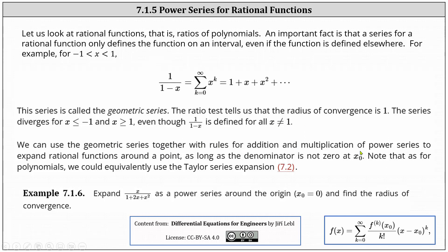We use rules for addition and multiplication of power series to expand rational functions around a point, as long as the denominator is not 0 at x sub 0. Note that as for polynomials, we can equivalently use the Taylor series expansion, which again is the formula shown below. As an example, we will expand x divided by the quantity 1 plus 2x plus x squared as a power series around the origin, indicating x sub 0 equals 0, and we will also find the radius of convergence.